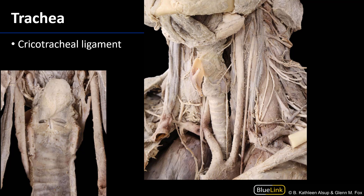As we can see here, here's the larynx with the thyroid cartilage that's been reflected away. Here's our cricoid cartilage, and then extending down contiguously is this fibro and hyaline cartilaginous tube with hyaline cartilage C-shaped rings that run the length of the tube.